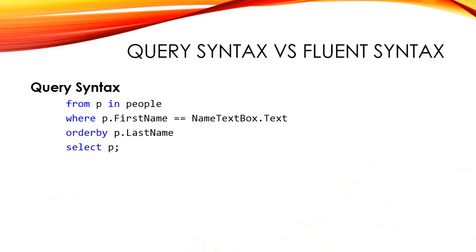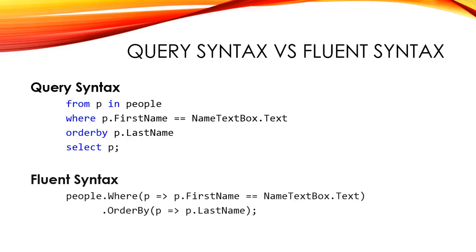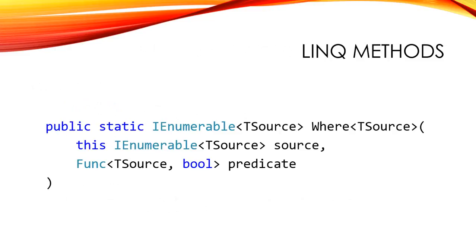LINQ — Language Integrated Query — is really awesome, and there are a couple of different ways we can use this technology. When we build LINQ statements using query syntax, it looks a lot like a query we'd use against a SQL database. This syntax is very approachable, but unfortunately the number of keywords are limited. The other way is using what's known as the fluent syntax, where we use the LINQ extension methods directly in our code. I prefer the fluent syntax because we get access to all of the extension methods available. One problem with the fluent syntax is figuring out how to use the methods.